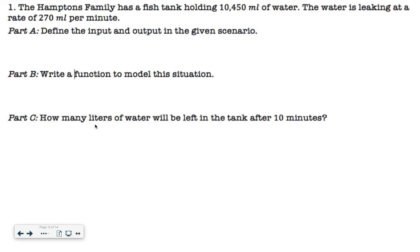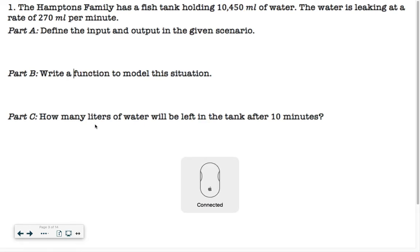Alright, so for the first one, the Hamptons family has a fish tank holding 10,450 milliliters of water. The water is leaking at a rate of 270 milliliters per minute. Define the input and output in the given scenario. Alright, so your input is going to be time. Typically, whenever you're dealing with a function, time is always going to be your independent variable, which is the X. So on part A, we're going to use M for minutes.